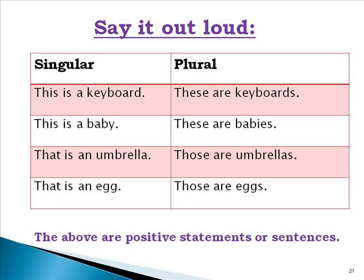So let's start the talk session — say it out loud with me so that you get accustomed to saying such sentences. This is a keyboard. These are keyboards. This is a baby. These are babies. That's an umbrella, those are umbrellas. That is an egg, those are eggs.